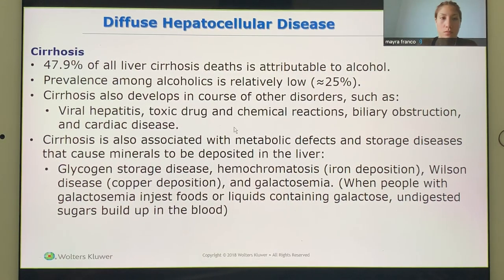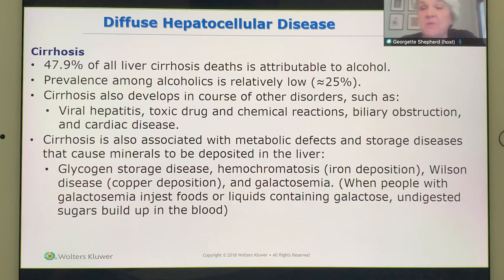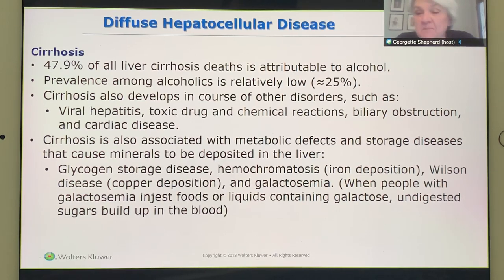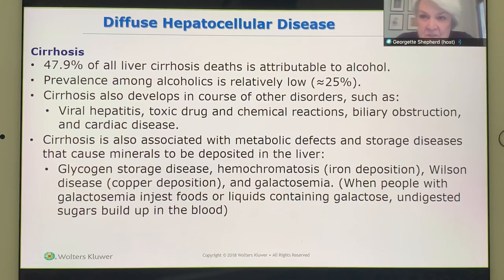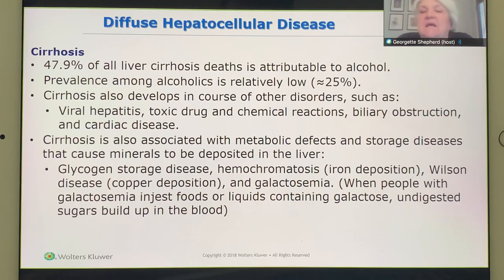49% of liver cirrhosis is contributed to alcohol. It can also happen with viral hepatitis, toxic drug and chemical reactions, biliary obstruction, and cardiac disease. For example, on Naked and Afraid, someone ate mushrooms raw and was rushed to the hospital in liver and renal failure. He could have eaten those mushrooms if he would have cooked them — you're not supposed to eat that type of mushroom without cooking them.